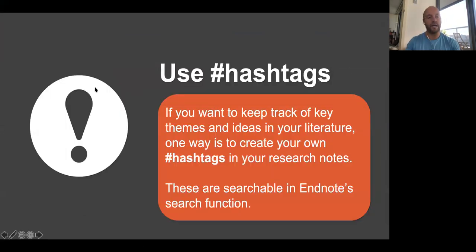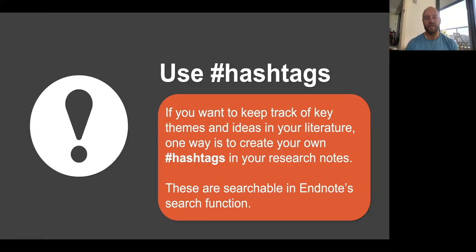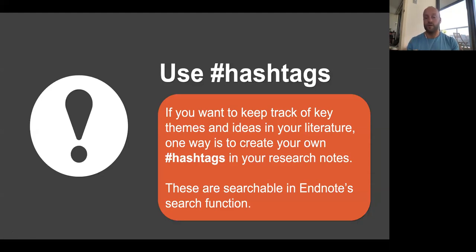You can also use hashtags in the research notes field — this is not something that EndNote has built in, it's just a culture that's grown up like Twitter. You can use hashtags to identify a particular keyword that is quite unique and searchable within EndNote. Often if you're using a phrase that's used regularly in the journal articles you've collected, you'll find a lot of results. Whereas if you're using hashtags in your research note field, the articles that come up when you search for that will be only the ones you've specifically tagged.